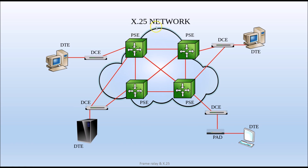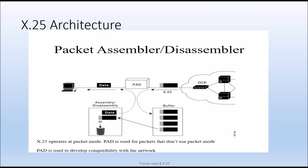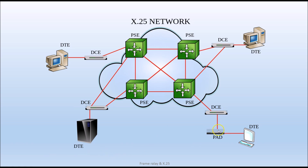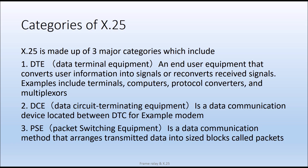This is the X.25 network cloud. The PAD — the Packet Assembler and Disassembler — operates in packet mode. PAD is used for packets that do not use packet mode. Since this architecture uses packet mode, anything that is not in packet mode, the PAD helps convert to make it usable for the network.